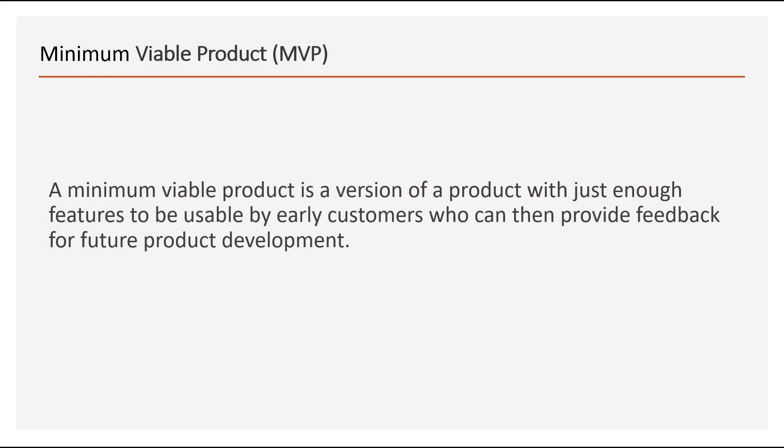In simple terms, a Minimum Viable Product is a version of a product with just enough features to be usable by early customers, who can then provide feedback for future product development.